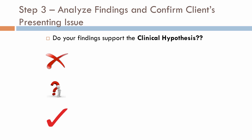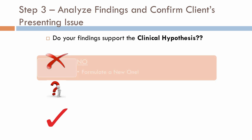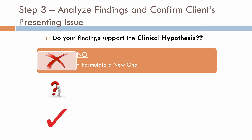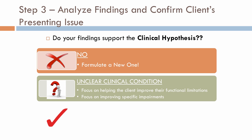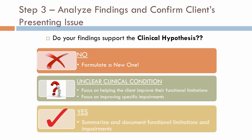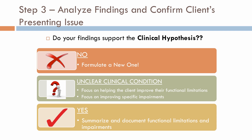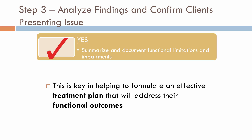Once you have performed your objective examination, analyze your findings and confirm the client's presenting issue. Do your findings support the clinical hypothesis? If not, you will need to formulate a new one. If the client presents with an unclear clinical condition, focus on improving their functional limitations and specific impairments. If your findings do support the hypothesis, summarize and document the functional limitations and impairments of your client — a key step in formulating an effective treatment plan addressing their functional outcomes.